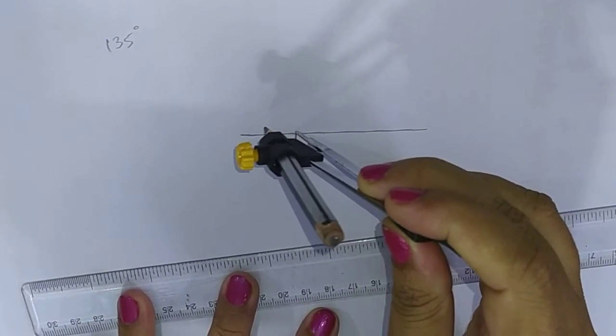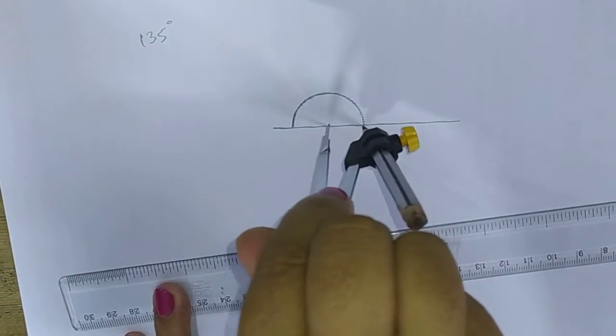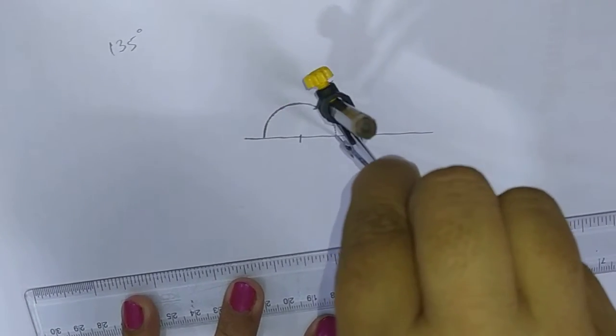From that, first we have to construct an angle of 90 degrees. For that, we need to construct an angle of 60 degrees.